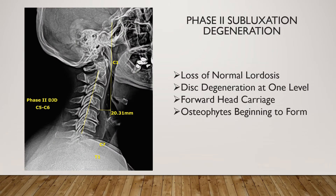Phase two subluxation degeneration may look like this, where we're seeing areas of degenerative disc disease and osteophytic formation. You can see that pictured here between the C5 and C6 vertebrae, where the disc space is degenerated and there's lipping or spurring on the edge of the vertebrae. If nothing is done to help this person, another 10 or 15 years may go by and we will move into phase three subluxation degeneration.